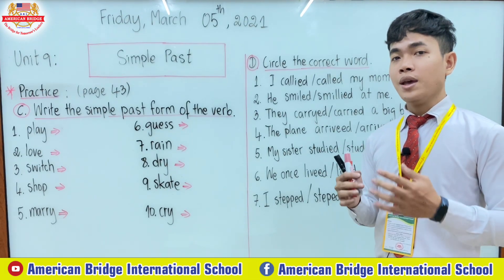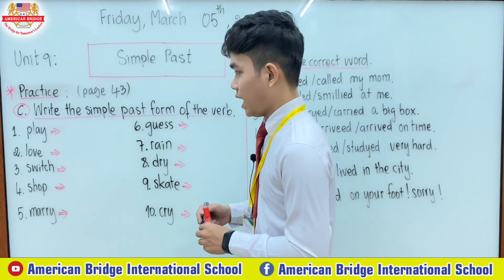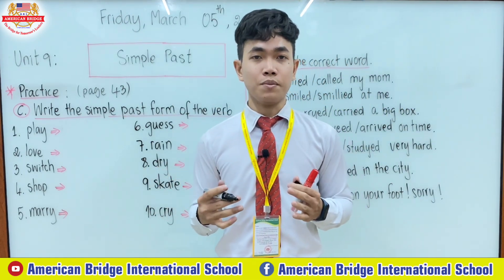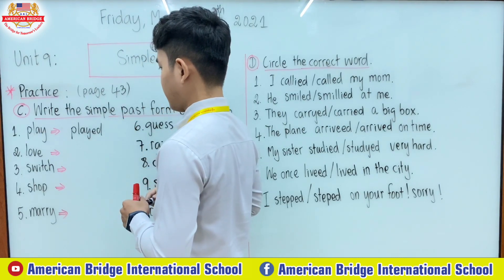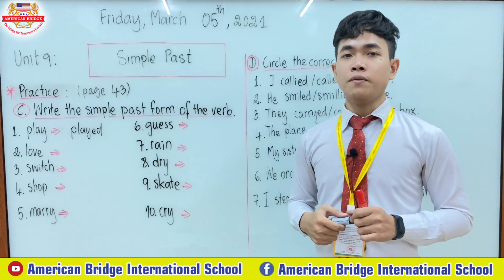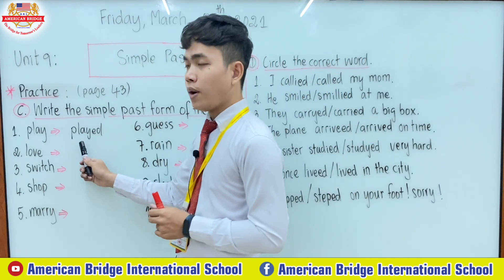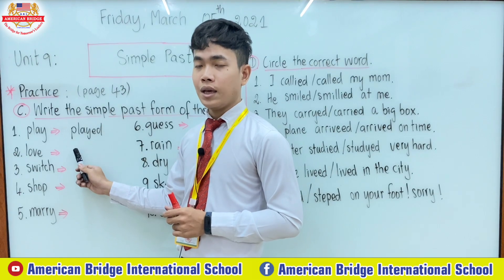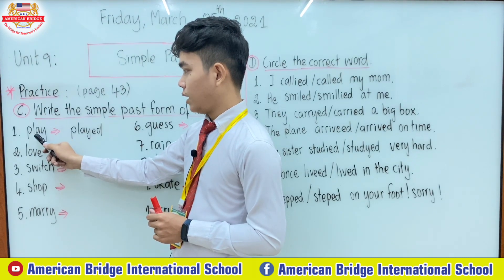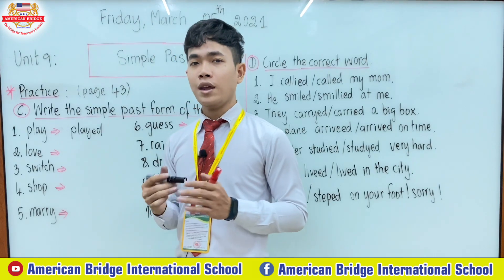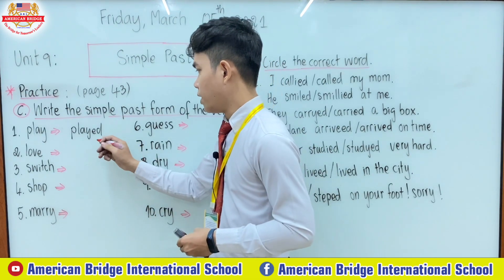In regular verb, we just add only -ed. So we're going to start with the first one: the verb 'play'. How can you change the verb 'play' into the simple past? You just add only -ed. A lot of students ask me, 'Why don't we change y to -ied?' In the verb 'play', before the y, the letter is a vowel — the vowel 'a'. So you don't have to change y to -ied. You just add only -ed with the verb 'play'.